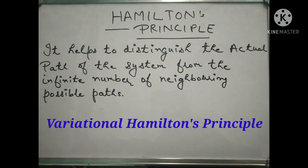So the first topic is Hamilton's Principle, which we can also call the Variational Hamilton Principle. I will try to make this topic as easy as possible, so we can discuss it in easy language. This principle helps to distinguish the actual path of the system from the infinite number of neighboring possible paths. The system going from the initial point to the final point — Hamilton's Principle tells us which path is the actual path.